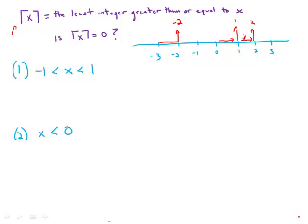Now that we understand this function, let's look at the statements. Statement one says x is between negative one and one. The trouble is, we have two integers worth of real estate here. If x is between zero and one, it rounds up to one.